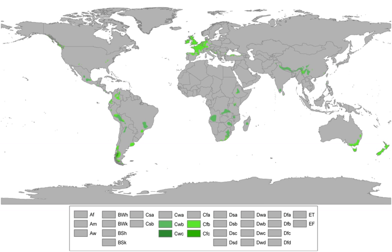Temperate oceanic climates, also known as marine mild winter climates or simply oceanic climates, are found either at middle latitudes or in tropical areas at higher altitudes. They are often found on or near the west coast of continents, hence another name for CFB: marine west coast climates. In addition to moderate temperatures year-round, one of the characteristics is the absence of a dry season.